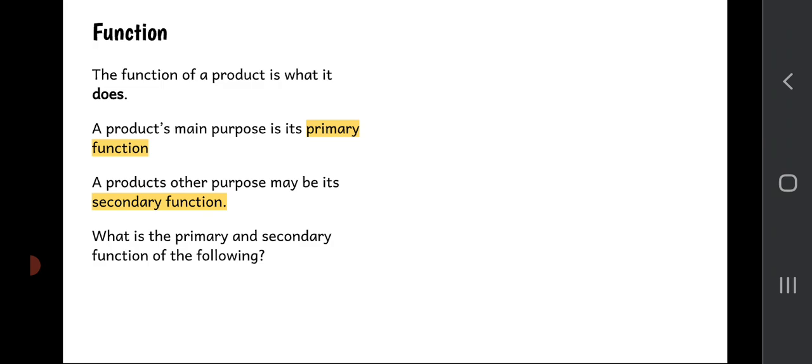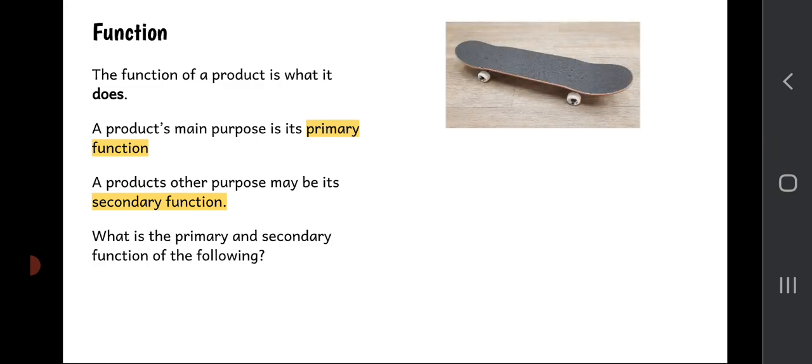In most cases we would all agree on what a product's main function is, but as you'll soon see, sometimes we don't agree on what its secondary function may be. For example, here are three objects. What would you say is the primary and secondary function of a skateboard? The primary function would be to carry a human around the place, so that somebody could stand on the board and travel along a pavement. But what's the secondary function? Is it to do stunts and tricks? Is it to be portable so that somebody can carry it? Is it some other thing?